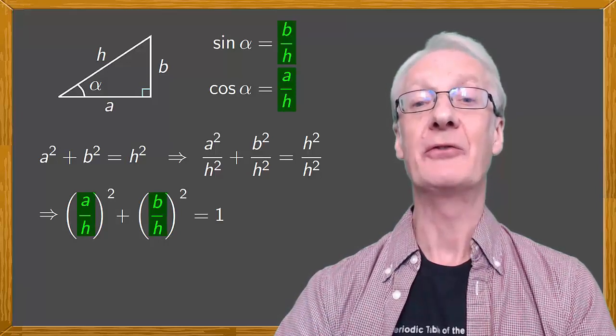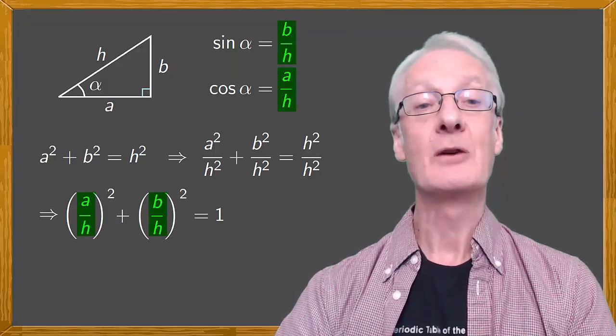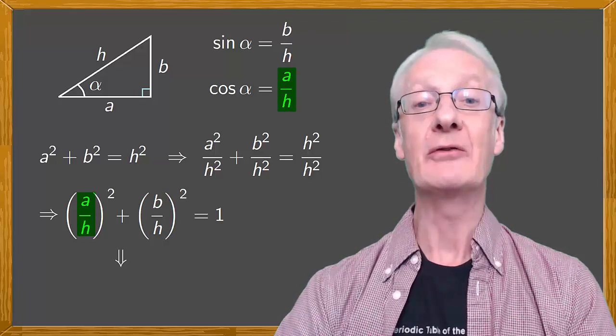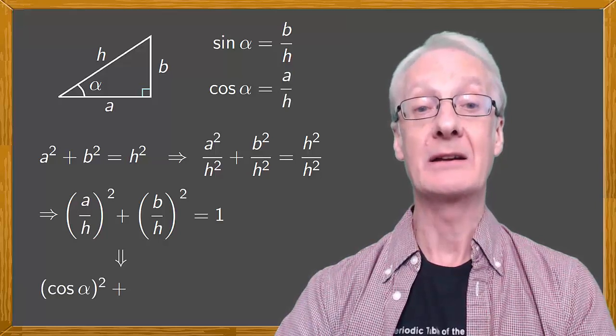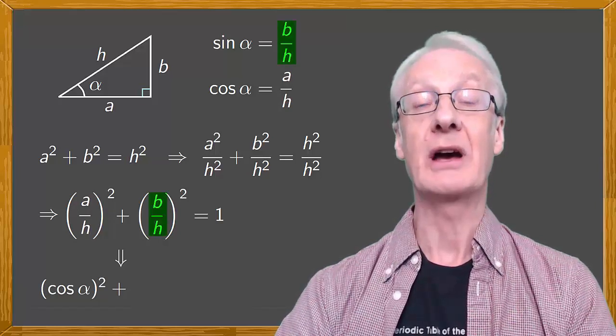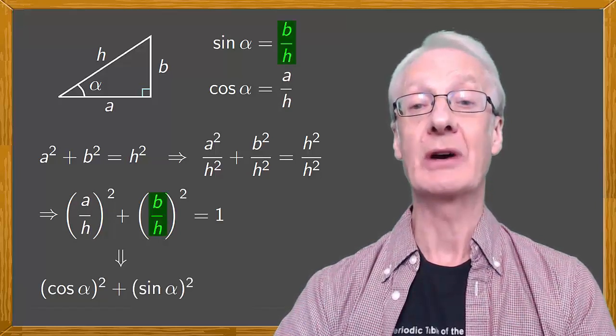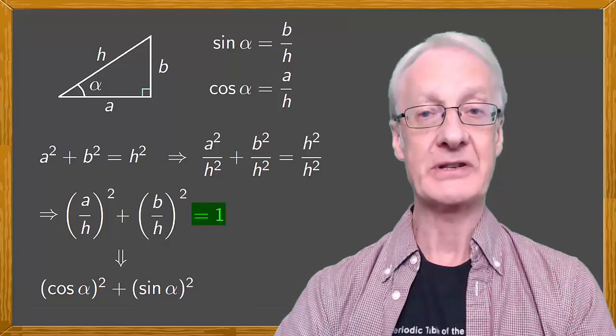This is what appears in the formula we derived. We can substitute a over h squared for the cosine of alpha squared, and b over h squared for the sine of alpha squared. And put this equal to 1.